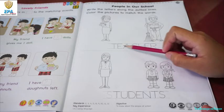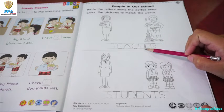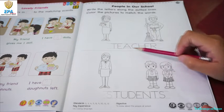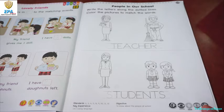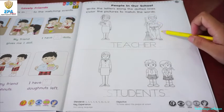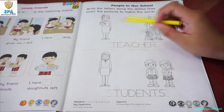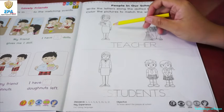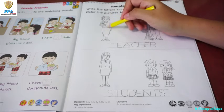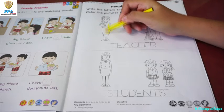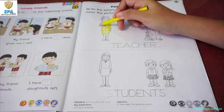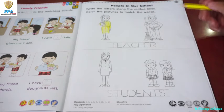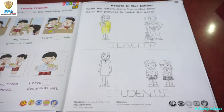T-E-A-C-H-E-R. Teacher. Now look at this picture. Who is the teacher? Is it the lady or the man? The teacher is the one who holds the book. So let's color her. She is a teacher, a person who teaches the students at school.